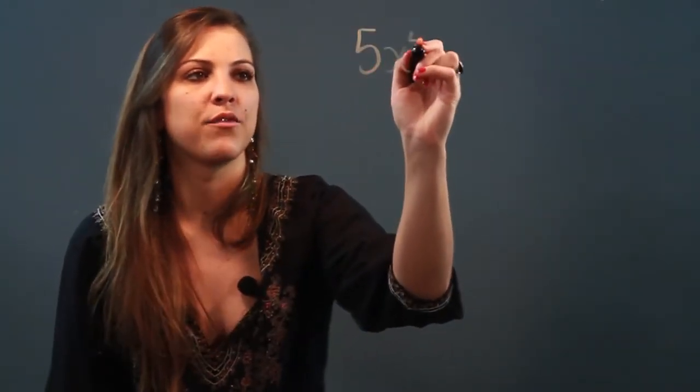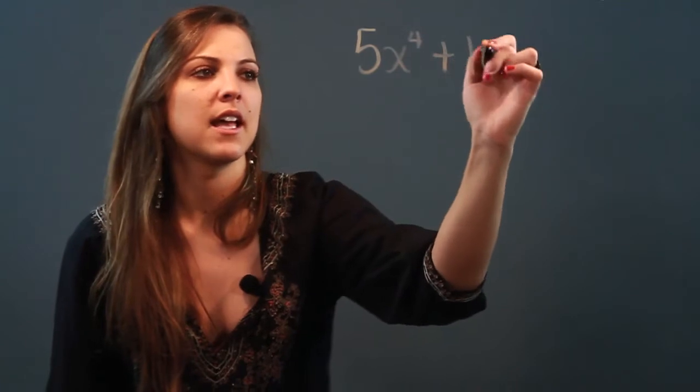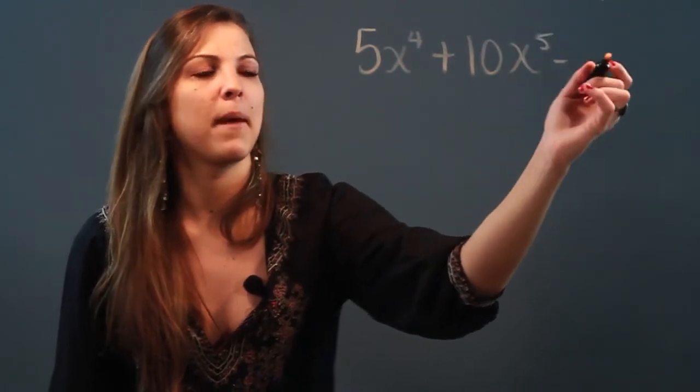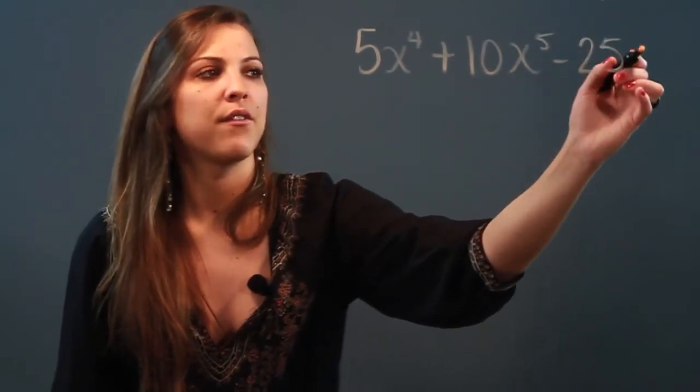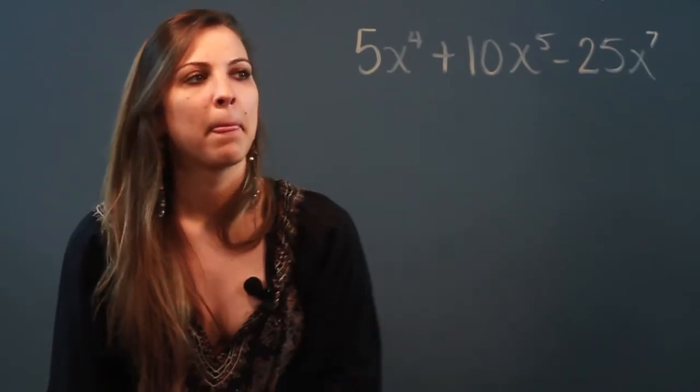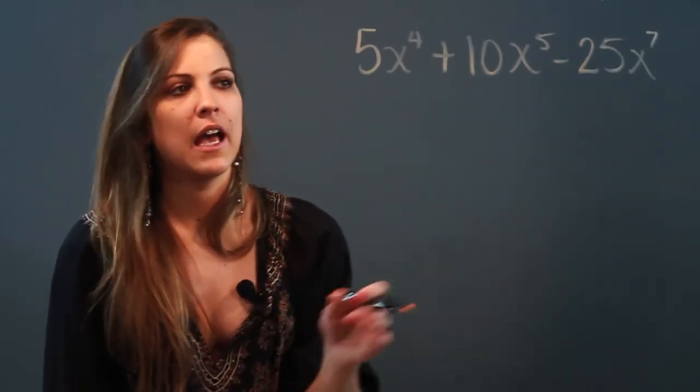Hi, my name is Maria and I'm a mathematician. Today I'm going to show you what the first step is when factoring out a GCF from an expression. If we've got the expression 5x to the fourth power plus 10x to the fifth power minus 25x to the seventh power, I want to factor this polynomial using GCF.